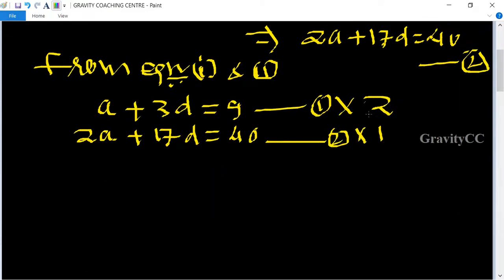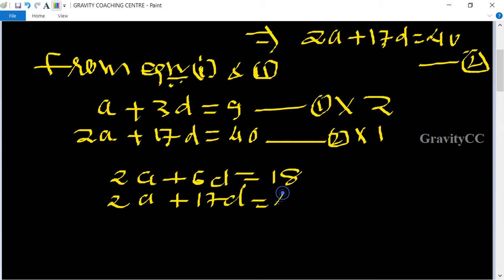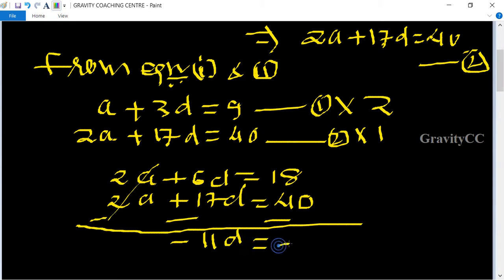So it will become 2a + 6d = 18 and 2a + 17d = 40. So now subtract: minus minus cancel, and we get -11d = -22.